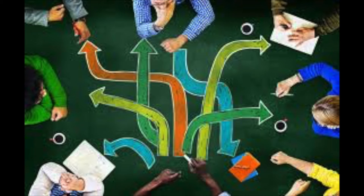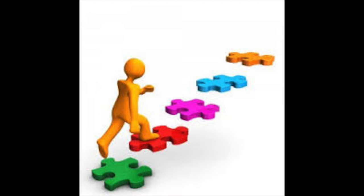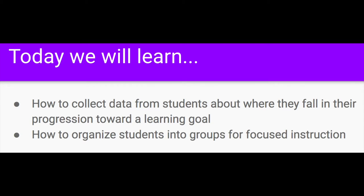Learning progressions create a path towards learning goals for students. On that path are specific details that teachers and students are able to use to identify where exactly they are on that path towards their goal. The placement of students on the path helps teachers identify what instructional actions need to be taken to guide students and what tools could be used to support them. In today's module, we are going to accomplish two things: collect data from students about where they fall on the learning progression, as well as how teachers can organize students into groups for focused instruction.